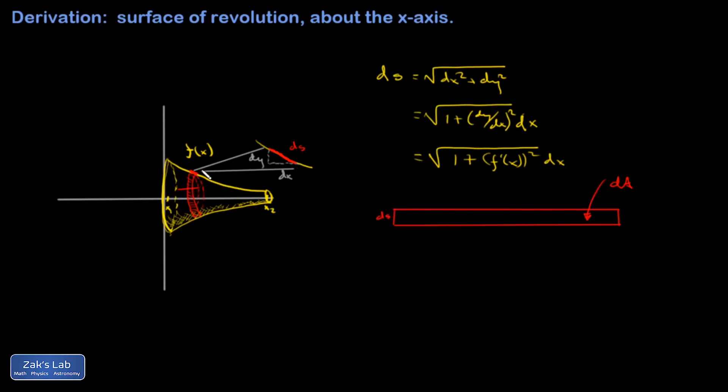So the length of the ribbon, well, that's just the circumference of it when it was rolled up. So if I'm at a location x right here, then the height of the function there, f of x, is the radius of that ribbon. So the circumference is going to be 2π times the radius.